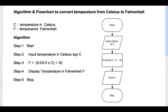The next example is an algorithm and flowchart to convert temperature from Celsius to Fahrenheit. The steps are: Start, input the temperature in Celsius C, apply the conversion equation to get F, display the temperature in Fahrenheit, and stop. In the flowchart we have the start and stop symbols, an input symbol for C, a processing rectangle for the equation, a print symbol for F, and then stop.